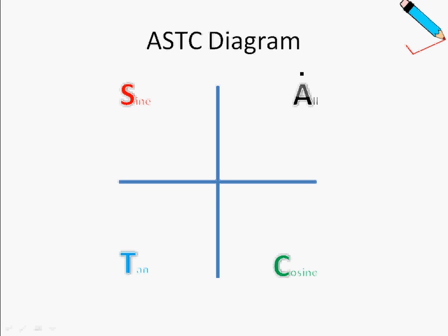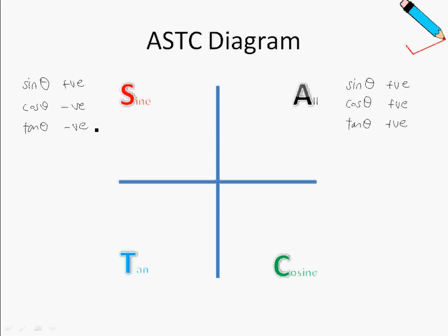In the ALL quadrant — the first quadrant — all trigonometric ratios are positive: sine of theta is positive, cosine of theta is positive, and tangent of theta is positive. In the sine quadrant, only sine of theta is positive, meaning cosine and tangent are both negative. In the tangent quadrant, tangent of theta is positive, whereas cosine and sine of theta are negative. Don't worry if you're feeling lost — we'll look at tangible examples for a more concrete understanding.